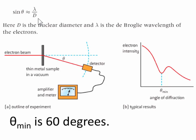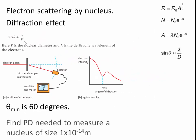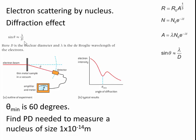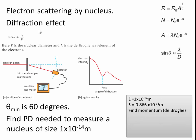Let's do an example. Theta is equal to 60 degrees. Find the potential difference needed to measure a nucleus of size 1 times 10 to the minus 14 meters. What kind of voltage do you need? d equals 1 times 10 to the minus 14. You can find that wavelength equals 0.866 times 10 to the minus 14 from this equation. Then if we know the wavelength we need to find the momentum from de Broglie. From that you find the energy in joules. Then you can find it in electron volts and then you can find the potential difference.